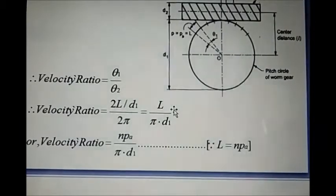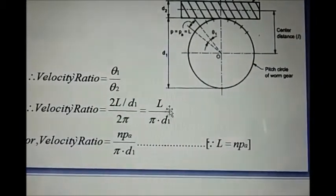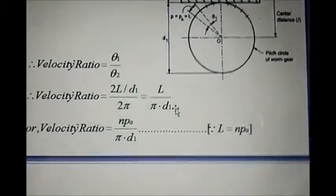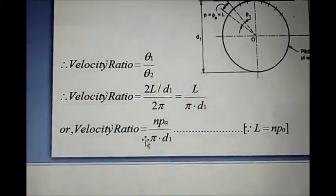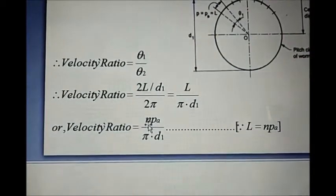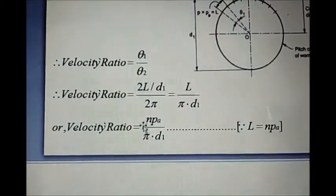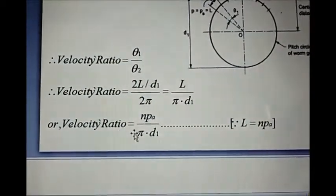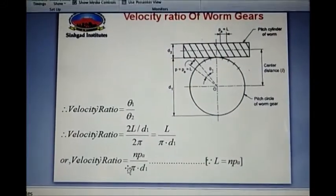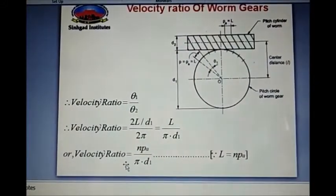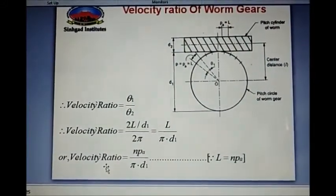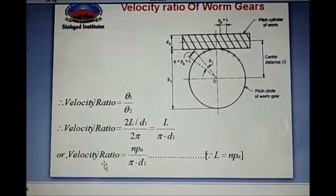The 2s cancel, giving us the velocity ratio as L divided by πD₁. We can also substitute L = Npa, so the velocity ratio becomes Npa divided by πD₁. Thank you for watching the video.